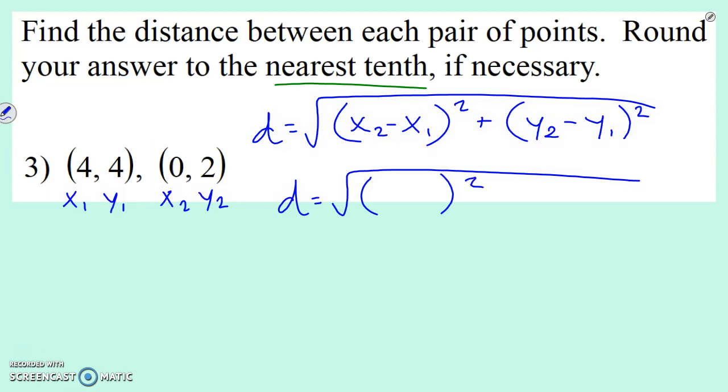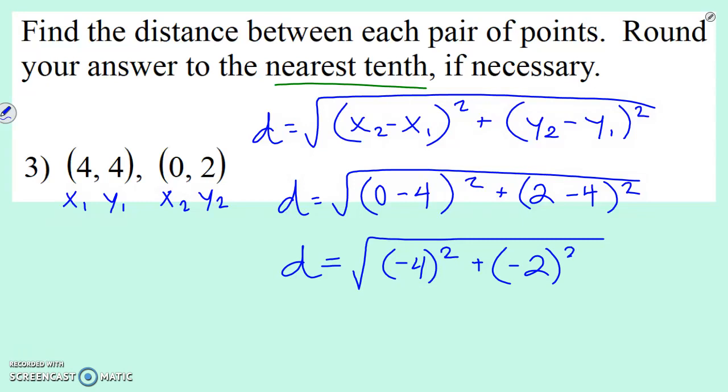I've got something squared plus something squared. And we have x2, 0, minus x1, which is 4. Then we have y2, 2, minus y1, 4. Let's simplify. So we have 0, minus 4, negative 4, squared, plus 2, minus 4, is negative 2, squared.